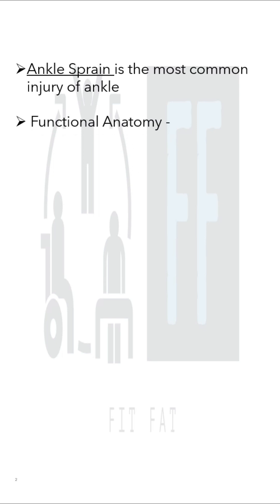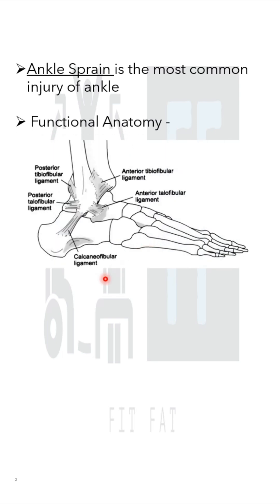Let's talk about the functional anatomy. In this figure you can see the important ligaments of the ankle. The lateral collateral ligament consists of the anterior talofibular ligament, posterior talofibular ligament, and the calcaneofibular ligament.